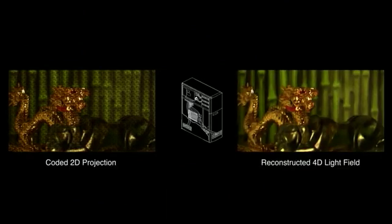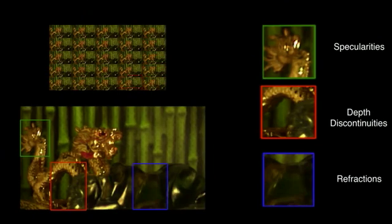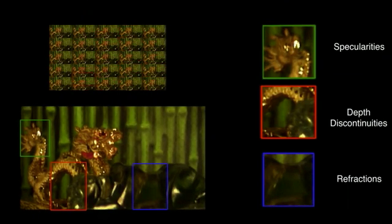As shown in this example, a 4D light field can be recovered from a single coded sensor image. Parallax is observed even for complex lighting effects such as occlusion, specularity, and refraction being exhibited by the background, dragon, and tiger, respectively.